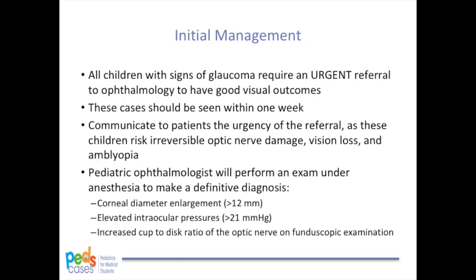After discovering glaucoma on history and physical exam, all children require an urgent referral to an ophthalmologist experienced at examining children. They should ideally be seen within one week. Your referral should include a detailed medical history, including any associated systemic symptoms, family history of ophthalmic disease including congenital glaucoma, and any findings on physical exam. Communicate to the family the urgency of this referral, as delays can cause irreversible optic nerve damage, vision loss, permanent corneal enlargement, irregular astigmatism, and amblyopia.